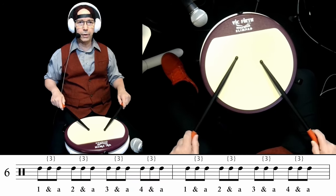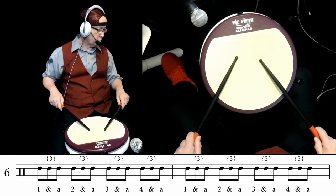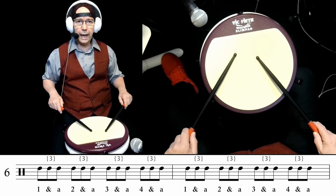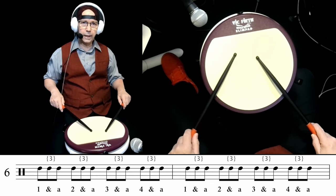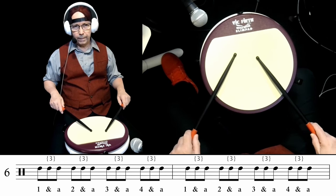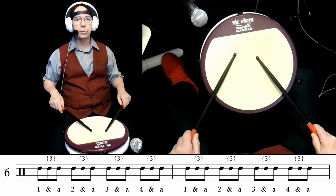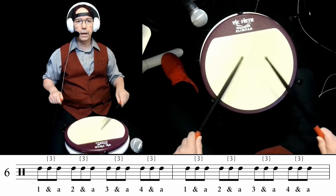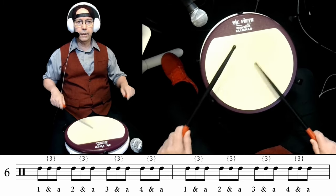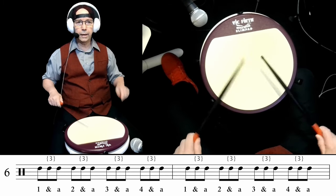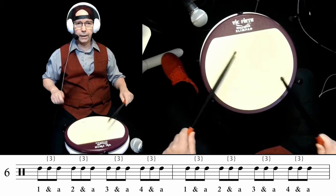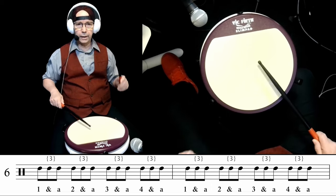Next line down are the eighth note triplets. These are: one AND ah, two AND ah, three E AND ah, four E AND ah. Play it: one AND ah, two AND ah, three E AND ah, four E AND ah — one AND ah, two AND ah, three E AND ah, four E AND ah.